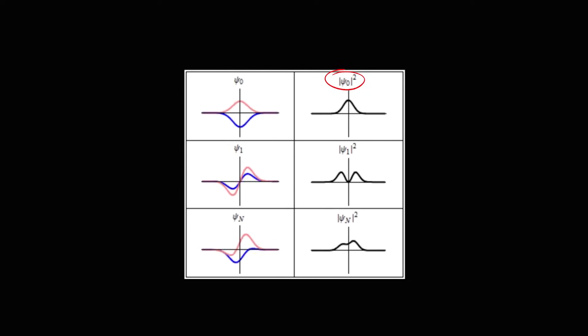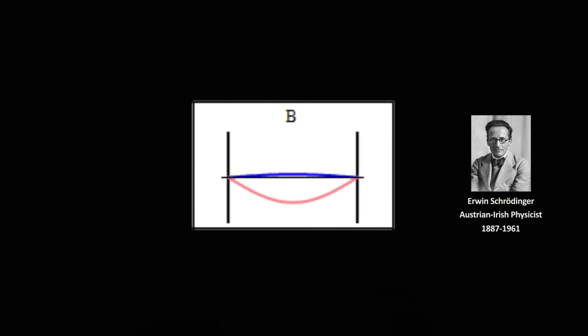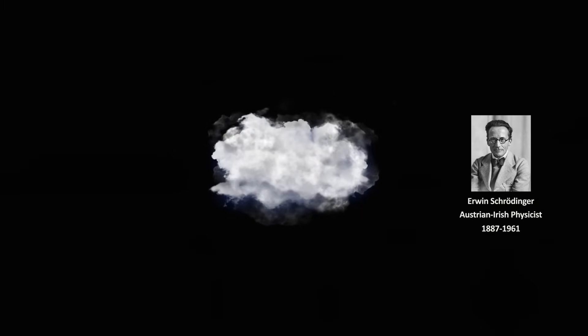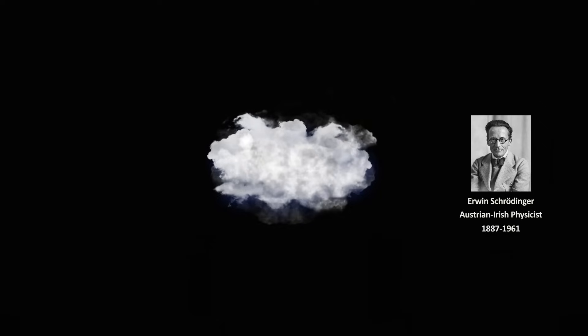But when we square an imaginary number, we get a real number. So the square of a wave function, the value of psi squared, becomes a real number. This has no imaginary component, so it can correspond to the value of some real, measurable quantity. At first, Schrödinger himself thought that the value of psi squared at any point in space tells us what the density of the quantum object like an electron is at that point. In other words, maybe the particle really is smeared out, almost like a cloud of gas, with different densities in different places. But he was wrong.